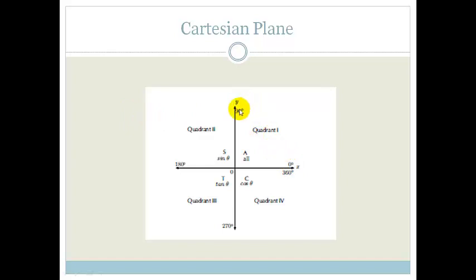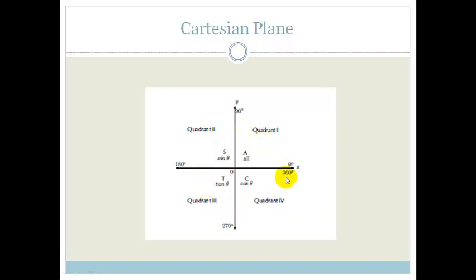0, 90, then it goes to 180, then to 270, and back to 360. This top quadrant here is quadrant 1, then it's quadrant 2, quadrant 3, and quadrant 4, and then back down to 0. Now we are going to learn how this Cartesian plane helps us in working out what is going on when we come to trig.